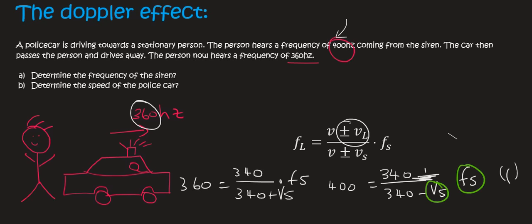Luckily, in both of these scenarios, the velocity of the source, which is the police car, stays the same. And so does the frequency of the siren. Remember, the frequency of the siren is the number of cycles that it's actually releasing. And so what we do now is we realize that we have two equations with two unknowns, and so we have to solve simultaneously.